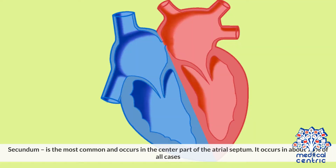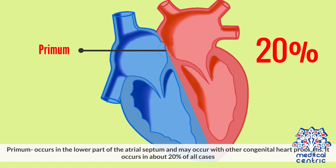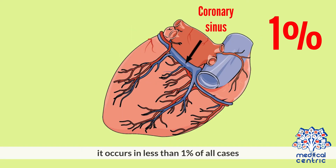There are four types of atrial septal defect. Secundum is the most common and occurs in the center part of the atrial septum, accounting for about 75% of all cases. Primum occurs in the lower part of the atrial septum and may occur with other congenital heart problems, accounting for about 20% of all cases. Sinus venosus is a rare type occurring in the upper part of the atrial septum, in about 4% of cases. Coronary sinus occurs in less than 1% of all cases.